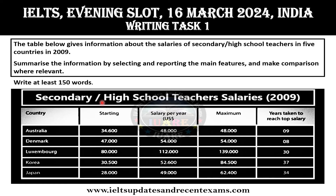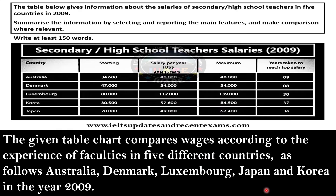Here is a table chart representing country and high school teachers' salaries in the year 2009. The five countries are: Australia, Denmark, Luxembourg, Korea, and Japan. The intro paragraph: 'The given table chart compares wages according to the experience of faculty in five different countries — Australia, Denmark, Luxembourg, Japan, and Korea — in the year 2009.'